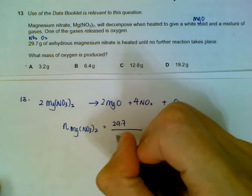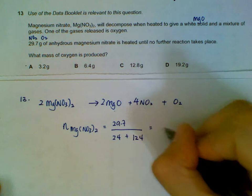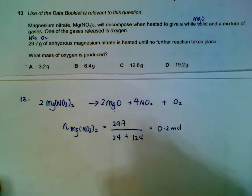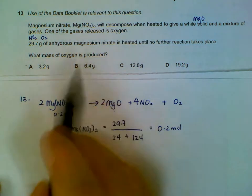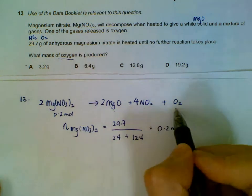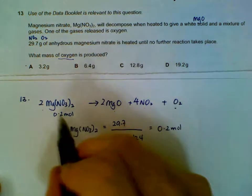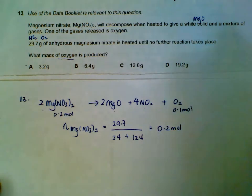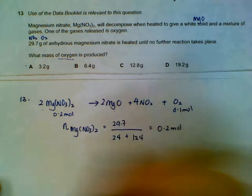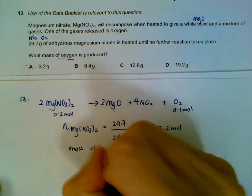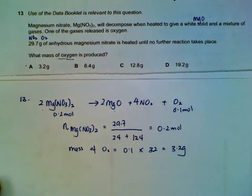Divide by the Mr: magnesium is 24, nitrate is 124. Using our calculator we get 0.2 moles. We are interested in oxygen — for every two moles of magnesium nitrate we have one mole of oxygen, so 0.2 moles gives us 0.1 mole of oxygen. To find the mass: moles multiplied by its Mr gives us 3.2 grams.